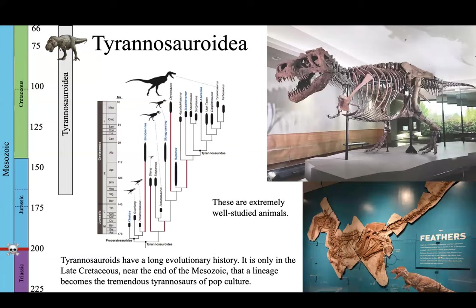Tyrannosaurus rex is an animal at the very end of a long evolutionary history of its family, the tyrannoroids. Tyrannoroids are small-bodied animals — I always think of them as the coyotes on the landscape in the Jurassic and early Cretaceous on the northern continents. You can find them in Europe, Asia, and North America. It's not until the very end of the Cretaceous, the last 15-20 million years or so, that the tyrannosaurids, a family within tyrannoroids, get quite huge. And of course T-Rex is the largest of them all.